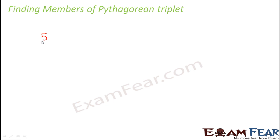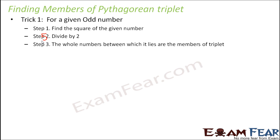So what I am going to do right now is I am going to give you a very simple trick that will help you to find out the members of Pythagorean triplet. Now there are two different tricks for odd and even numbers respectively. So our trick number 1 is for a given odd number like 5. 5 is an odd number. So for 5 we will apply this trick 1. So it is a simple 3 step trick. So these are the 3 steps of the trick.